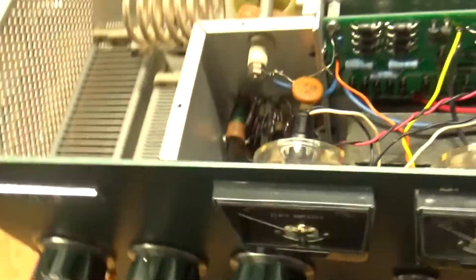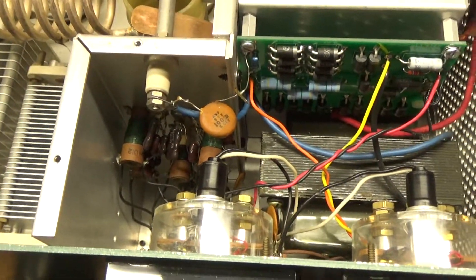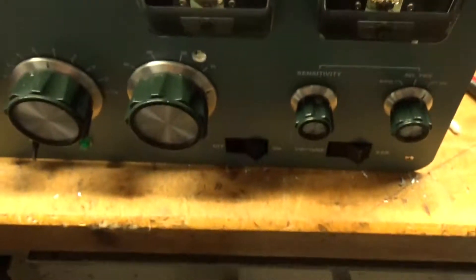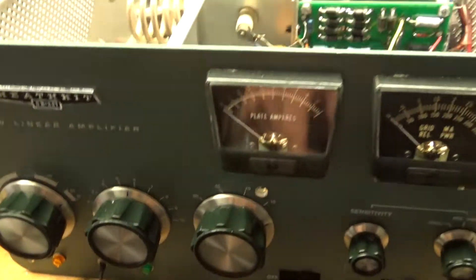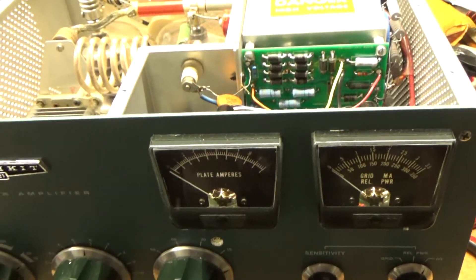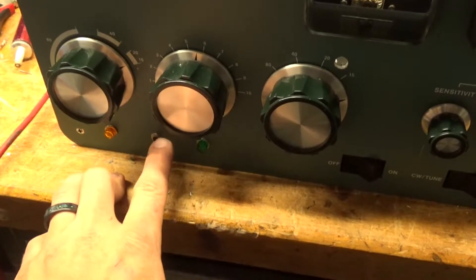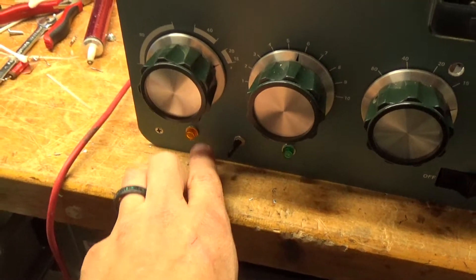Customer said he wanted adjustment of the 10 meter input pi network, so he had drilled a hole here. I'll have to go get a cap for it. He wanted to be able to do it without taking the front panel off. It has this standby switch. When it's in operate, the green light lights up. Standby, orange light.